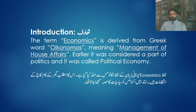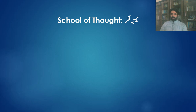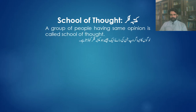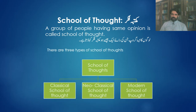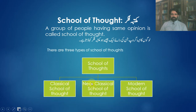Economics Greek word 'Economist' سے derive کیا گیا ہے اور اس کا meaning ہے management of house affairs۔ Adam Smith کی book سے پہلے economics کو politics کا حصہ سمجھا جاتا تھا اور یہ political economy کہلاتا تھا۔ School of thought کے بارے میں بھی پچھلے lecture میں گفتگو کی تھی کہ group of people having same opinion is called school of thought۔ Economics میں تین school of thought ہیں: classical, new classical, اور modern school of thought۔